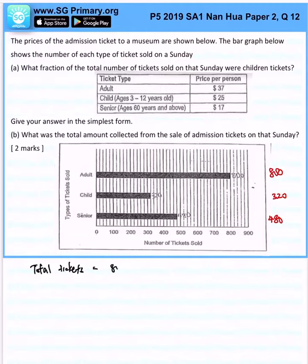So total number of tickets, that is 800 plus 320 plus 480. That is 1600.